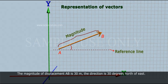The magnitude of displacement AB is 30 meters. The direction is 30 degrees north of east.